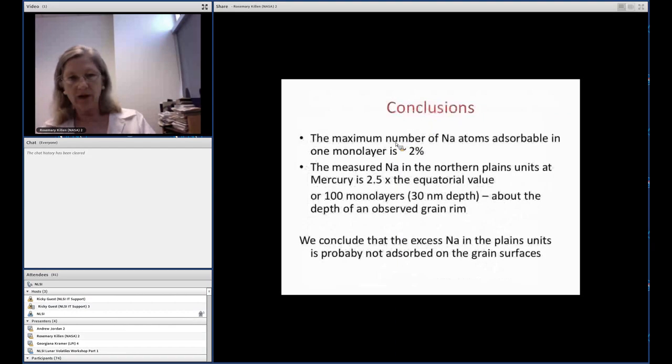If you look at grain rims, and this figure's already been shown once today, but I think it's applicable, the rim is, for real grains, fairly small. The two arrows at the top show nanophase iron. In general, this is what you would be looking at as a very small rim.